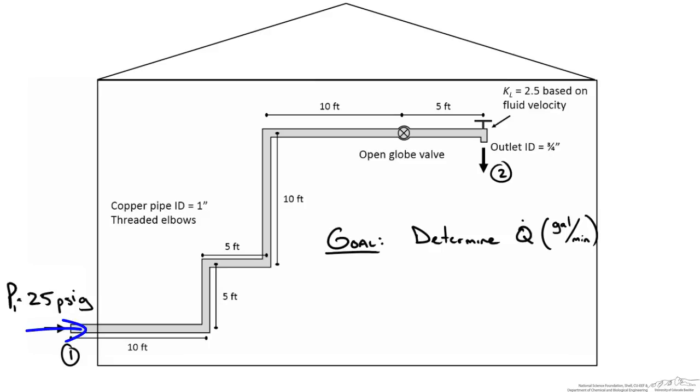We have water flowing from our city supply network into our house at 25 psi gauge pressure, and we know it leaves a faucet in the second floor of the house. So right away we can show that P2 is equal to 0 psi gauge since it is open to atmosphere. We are given some information in terms of the length and height of this pipe network as well as some of the connections that make up this system.